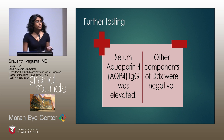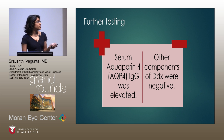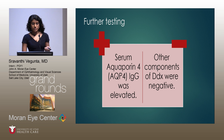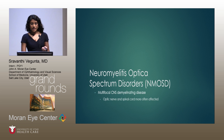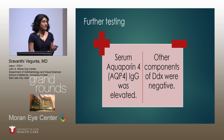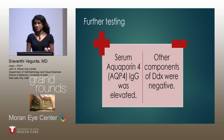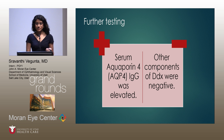She was worked up for the differential and the only real positive lab finding was an elevated aquaporin-4 IgG antibody, also known as NMO or neuromyelitis optica IgG. The patient was also treated with IV methylprednisolone, and her MRI findings didn't show any significant inflammation of her optic nerve.